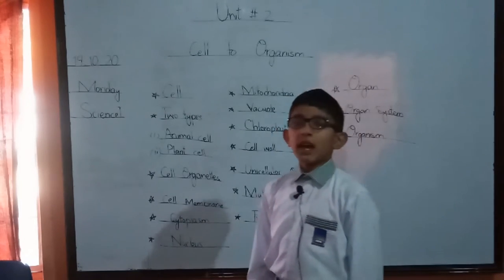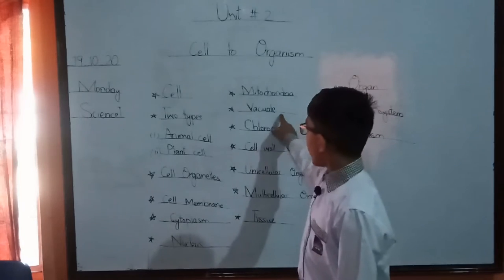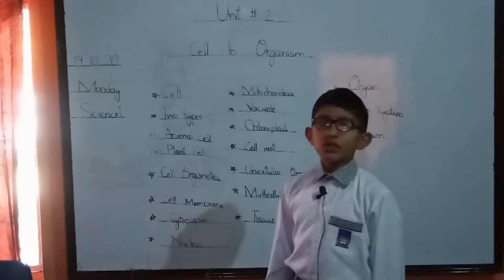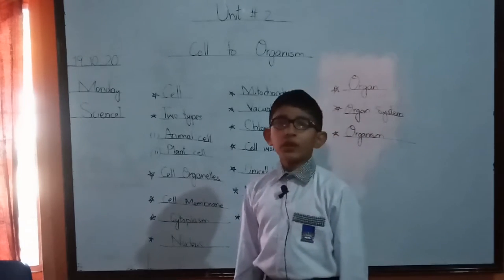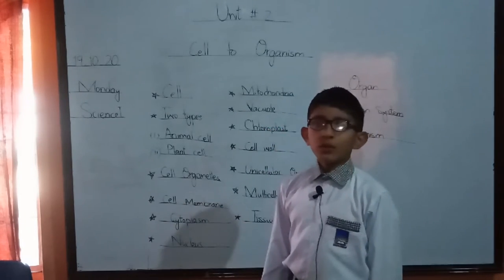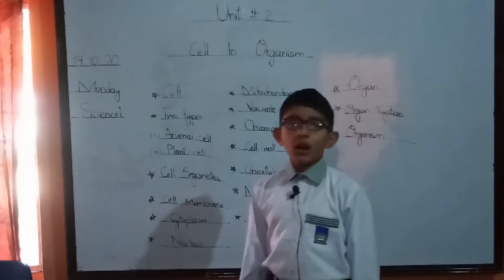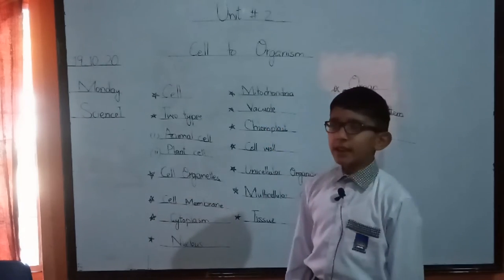Mitochondria gives power to the cell, so it is called the powerhouse of the cell. Vacuoles store food, water portals, and waste material in the cell.